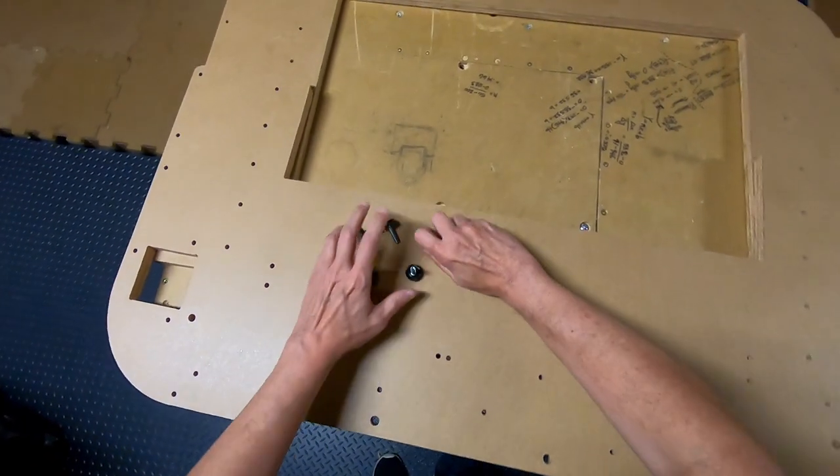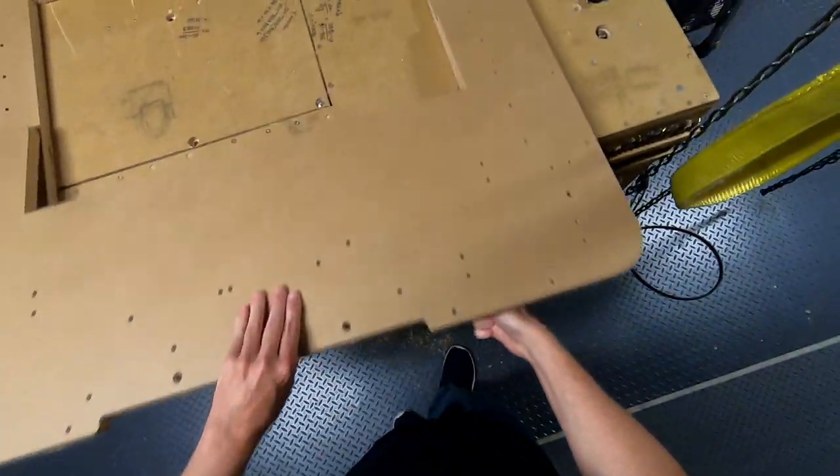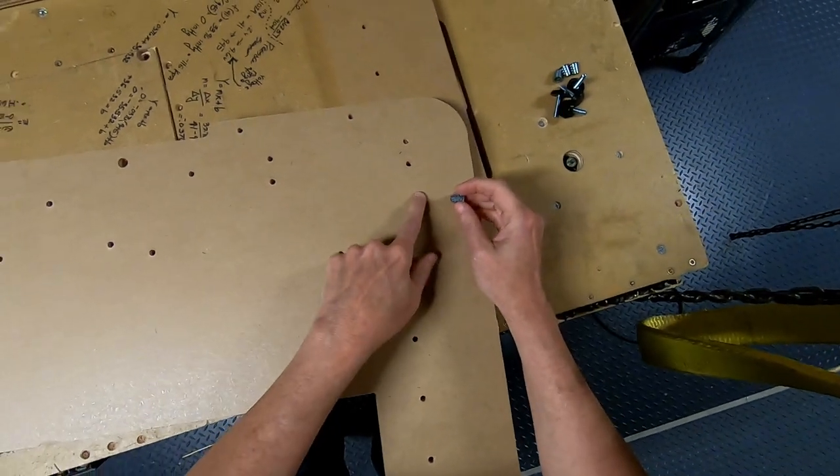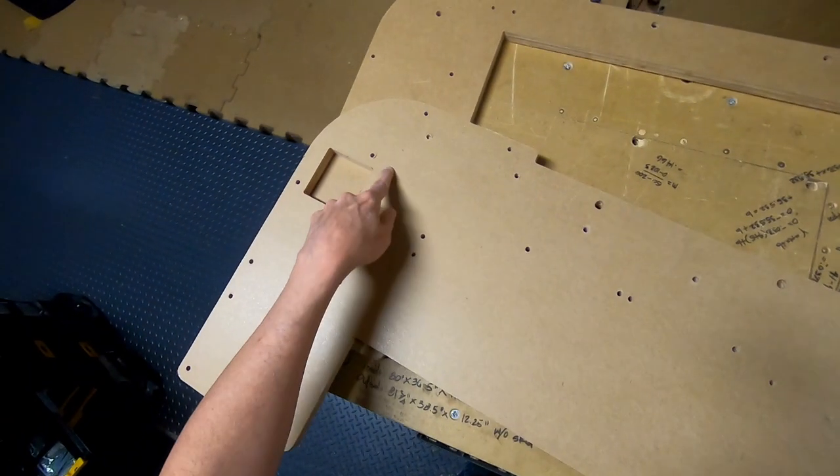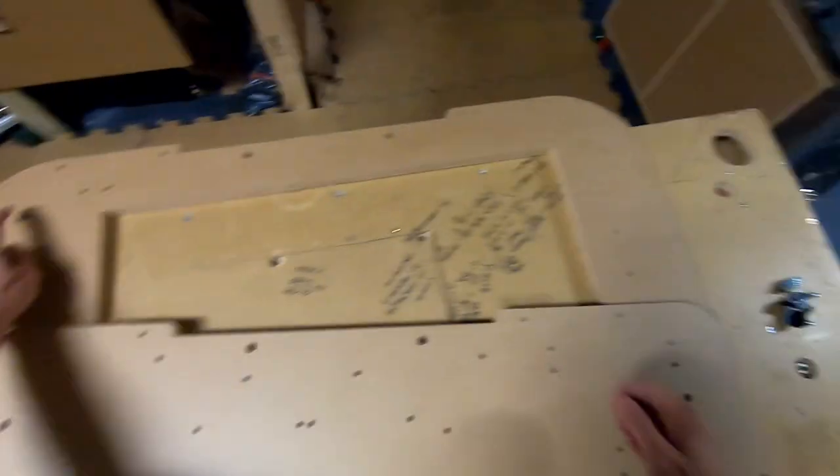So we're going to flip them over. We're going to put the nut inserts on the bottom here, so we need to flip these over and we're going to put the nut inserts in the larger holes here. One, two, and then on the underside of this one here and here.